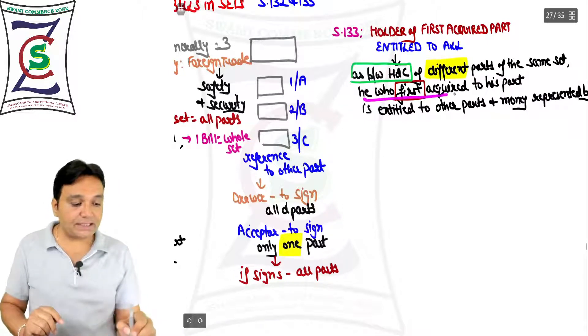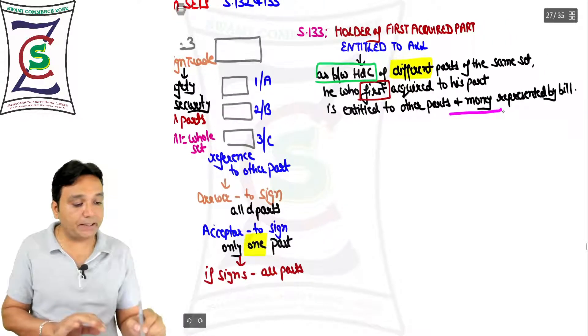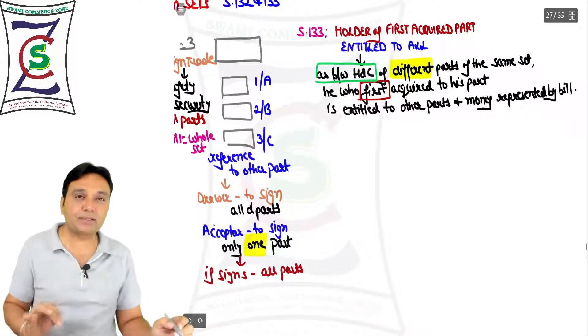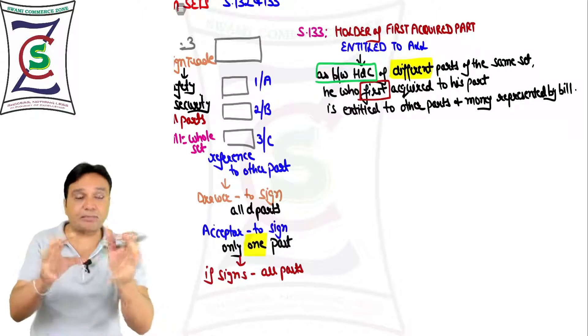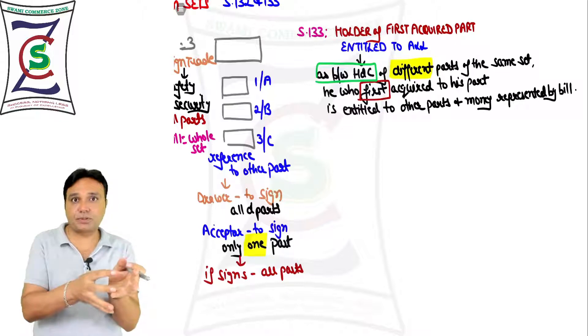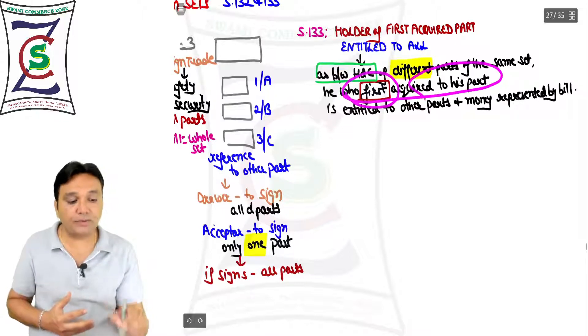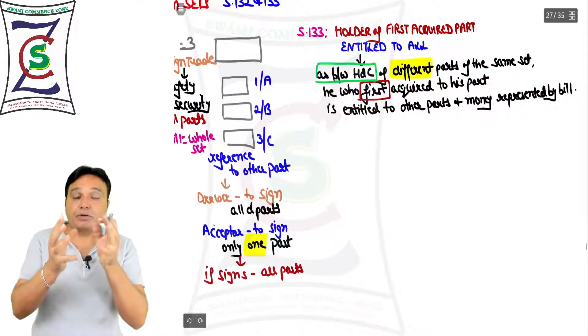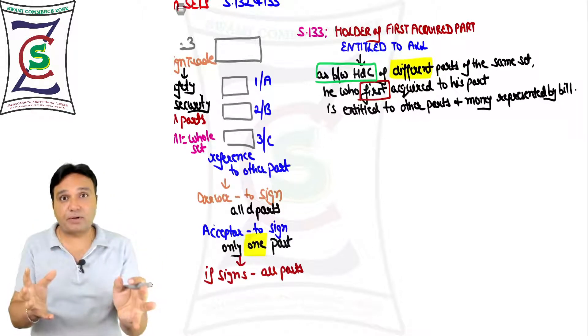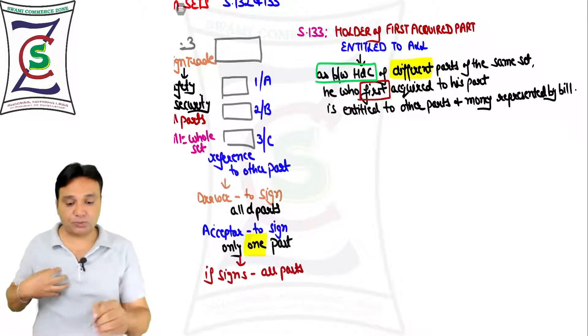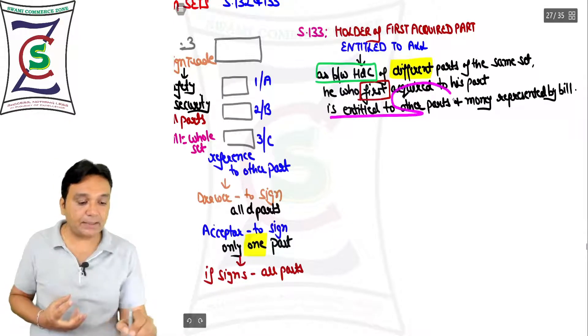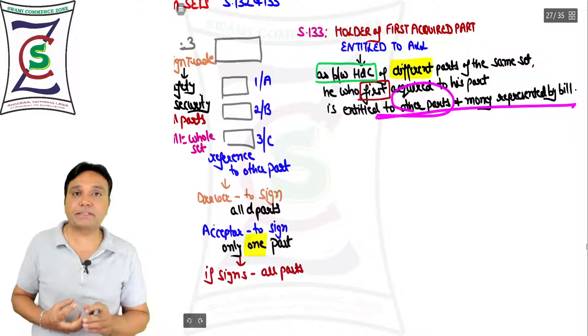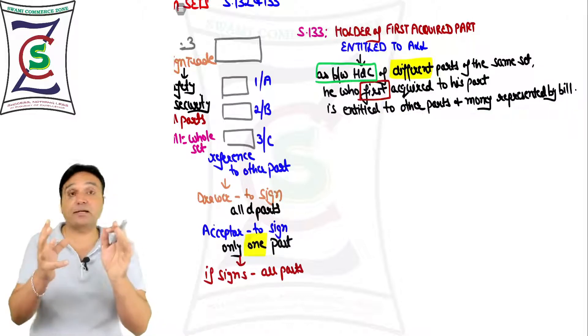He who first acquired to his part is entitled to other parts and money represented by bill. It is like the FIFO method in accounts - first in, first out. He who first acquired to his part - you have to prove in the court of law that I obtained it first. Whoever is getting the part on an earlier date is entitled to other parts and the money represented by bill.